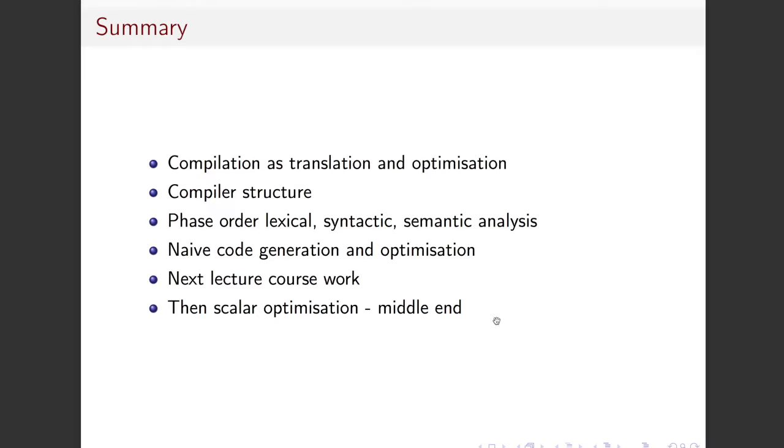So to summarize what we've learned in the eight now parts of this lecture, we have seen that compilation is translation and optimization, so we need to translate the code, but we also need to optimize it these days. We've looked at what a compiler is made up of. We've looked at the phase order of the front end with lexical, syntactic and semantic analysis. We've looked at a very, very naive way of doing code generation at the very back end, and we have seen our first two optimizations, although we haven't really seen very much about them. And in the next lecture, we're going to talk about what the coursework is going to be, which is going to be very exciting. Are you looking forward to that? Are you going to do the coursework?